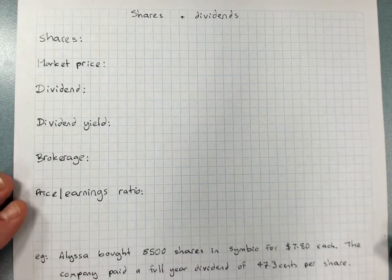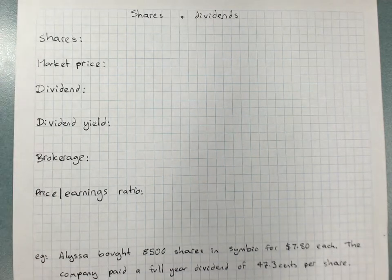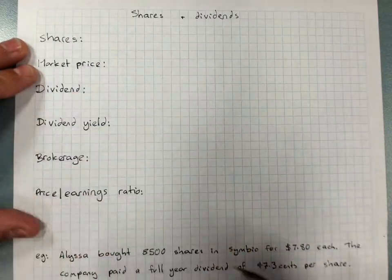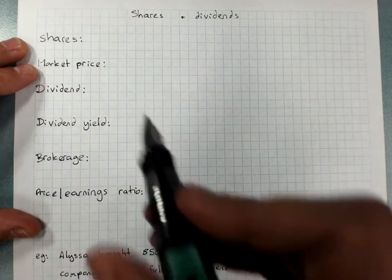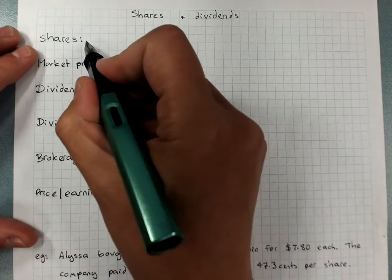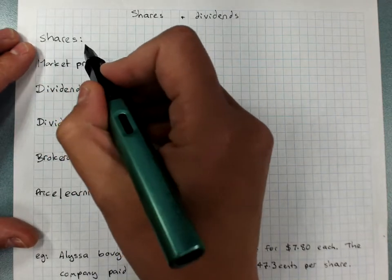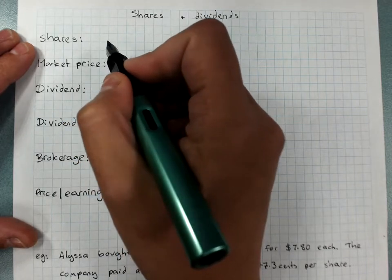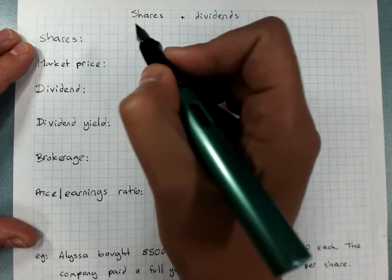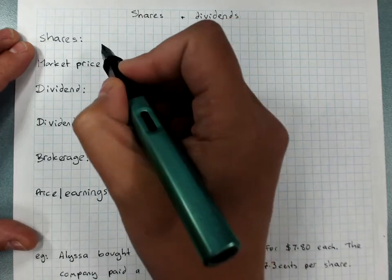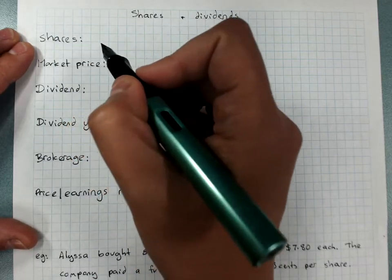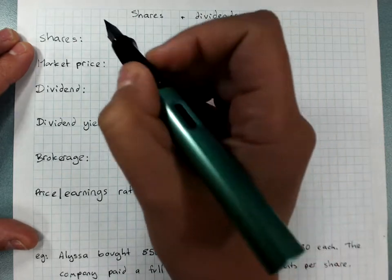Shares and dividends. In financial maths, shares are small fractions of the ownership of a company. So a company is shared between the shareholders, and when the company makes a profit, the profits sometimes are shared out per share. So the people who own small bits of the company get small amounts of the profits.